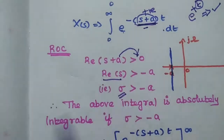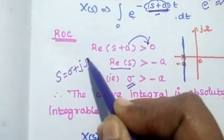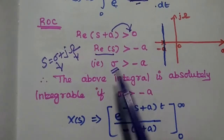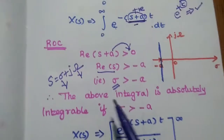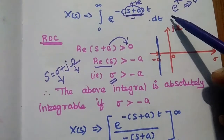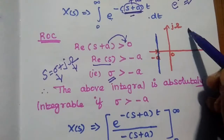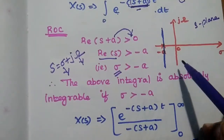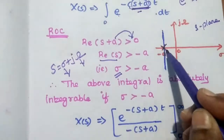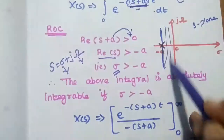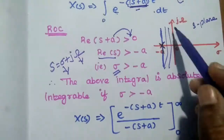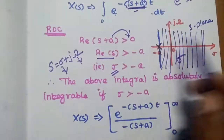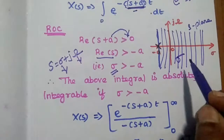The real part of S is sigma, since s = σ + jω, where sigma is the real part and jω is the imaginary part. The real part should be greater than −a. Therefore the integral is absolutely integrable. In the S-plane, we mark the point −a on the real axis. Whenever sigma is greater than −a, we are in the greater region. This region, where sigma > −a, is called the region of convergence.